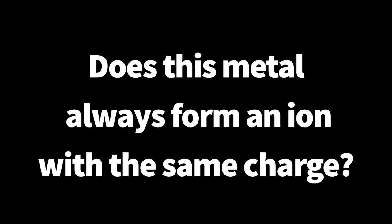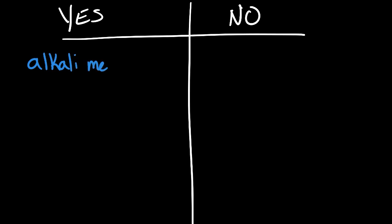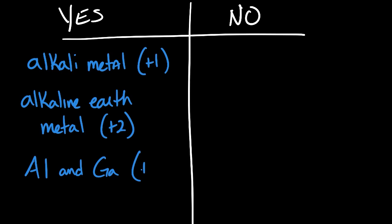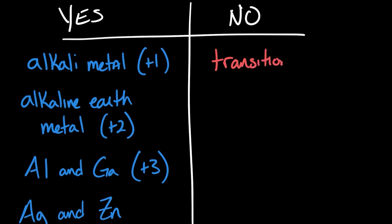When presented with the chemical formula of an ionic compound, there is one question we should ask: does this metal always form an ion with the same charge? We would answer yes if the metal is an alkali metal that forms a +1 ion, an alkaline earth metal that forms a +2 ion. Aluminum and gallium always form +3 ions. And while transition metals typically form more than one charged ion, silver and zinc are exceptions and also fall into the single-charge category. We would answer no if the metal is any other transition metal, or a metal like tin or lead, which aren't transition metals but do form more than one charged ion.